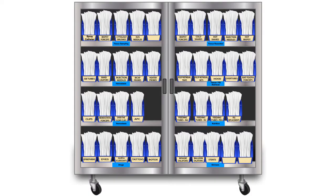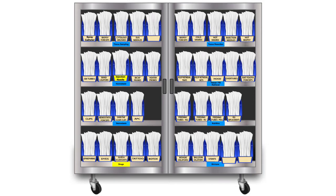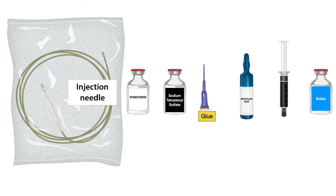When you go to your storage area, you need to pick up the injection needle and also make sure that your drugs are in enough supply. The injection needle has a size of anywhere between 23 to 25 gauge — it is a very small needle.